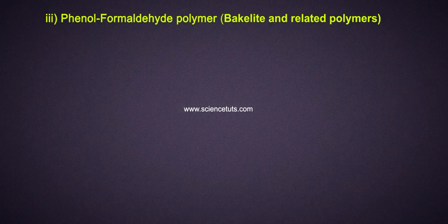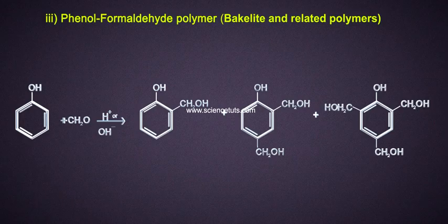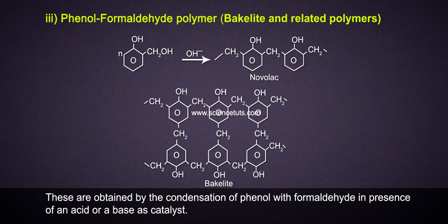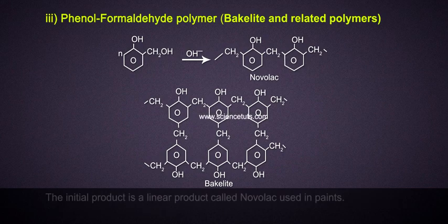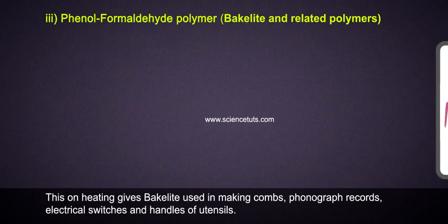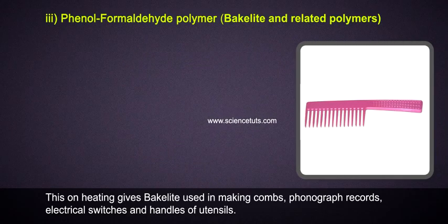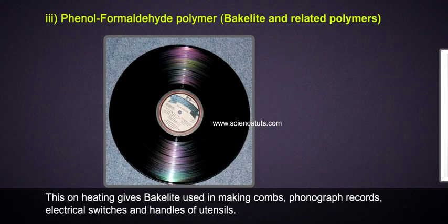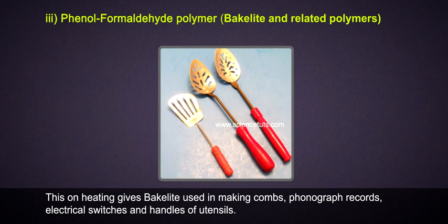Phenol Formaldehyde Polymer — Bakelite and related polymers: These are the oldest synthetic polymers. These are obtained by the condensation of phenol with formaldehyde in the presence of an acid or a base as catalyst. The initial product is a linear product called Novolac, used in paints. On heating, this gives Bakelite, used in making combs, phonograph records, electrical switches, and handles of utensils.